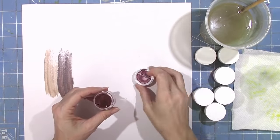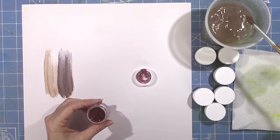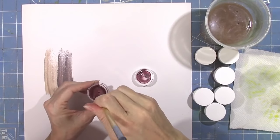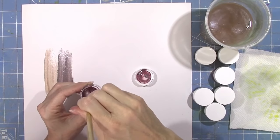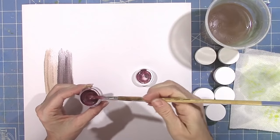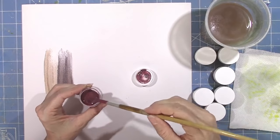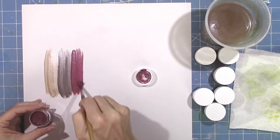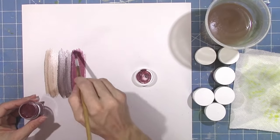This next color is called Berrylicious and it's a really pretty pink color. And I'm just going to do the same thing. I'm going to give it a stir and brush it down onto the paper. So the new formula, it's a lot smoother and a lot creamier. And I think it's a little bit thicker from what I can tell.